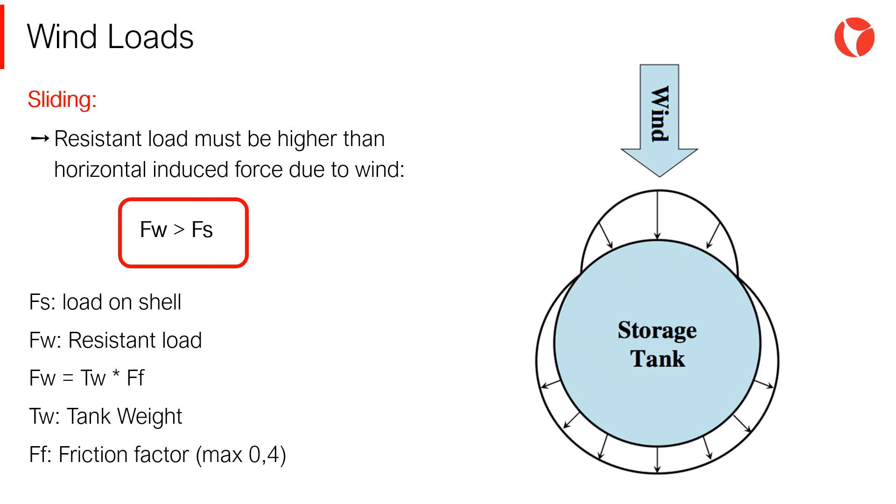This way, the condition to be verified is the following: Fw needs to be greater than Fs, where Fw is the resistant load and Fs is the load on the shell due to wind. In turn, Fw is Tw, that is the sum of weights, shell, roof and bottom, and Ff is the ground-bottom friction factor. It can be found on section 5114 of the code, as a maximum 0.4.